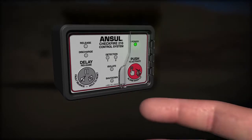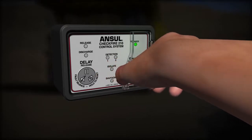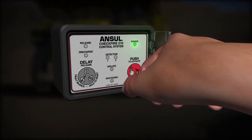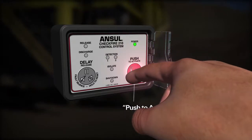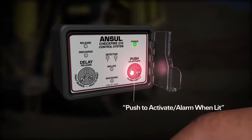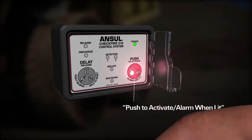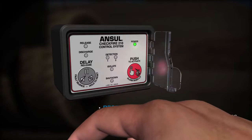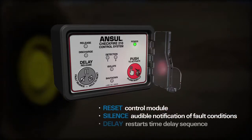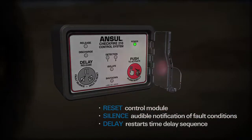The system can be electronically actuated using the guarded manual activation button. Pushing the button immediately triggers the release circuit and illuminates the red LED for 10 seconds. The CheckFire 210 display module features a single button to reset, silence, or delay system release.